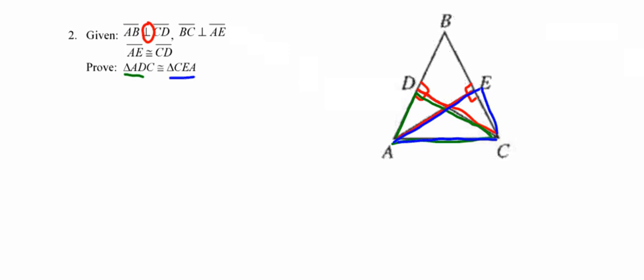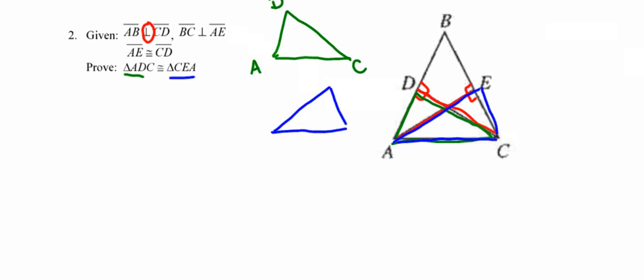The biggest advice I can give you is to separate the two triangles. So I'm going to draw triangle ADC and triangle CEA separately and mark my givens in those separated triangles. I have right angles at D and at E, and AE congruent to CD. At this point I've marked all my givens and have one pair of congruent sides and one pair of congruent angles. Looking for shared sides, both triangles share side AC, so that's a pair of shared congruent sides.